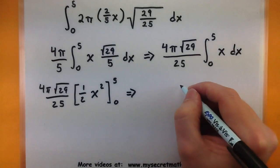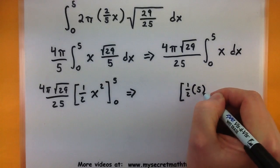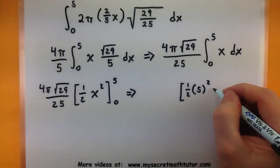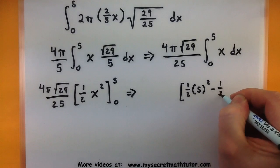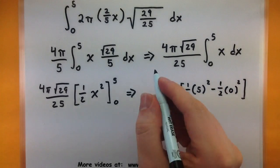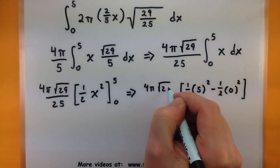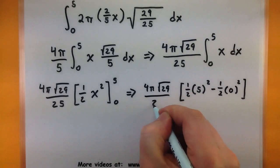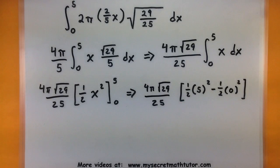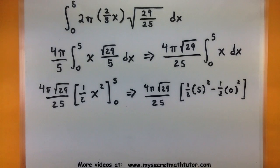Looking at evaluating this, so I'd plug in the five, and we'd end up plugging in the zero. Don't forget our coefficient out front, and we'll continue on. So let's see, this guy will just be a zero, no need to worry about that. Looks like I'll have twenty-five over two for that.